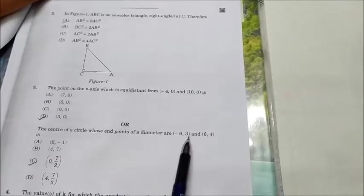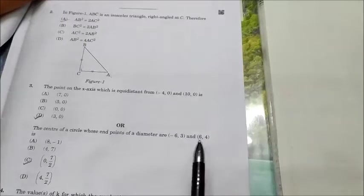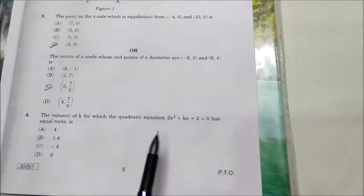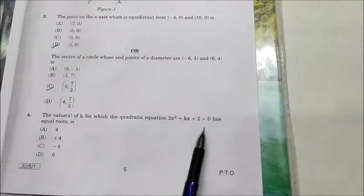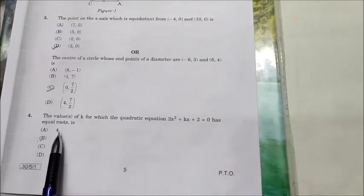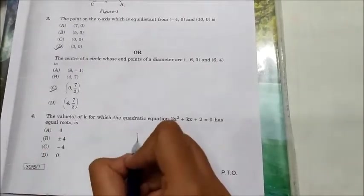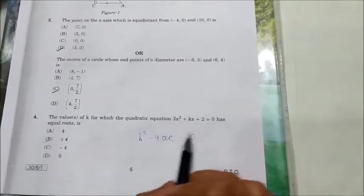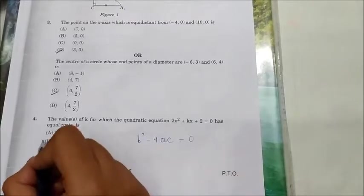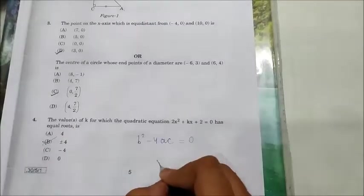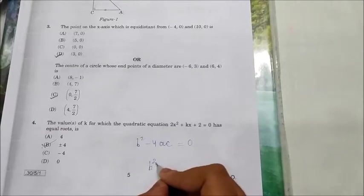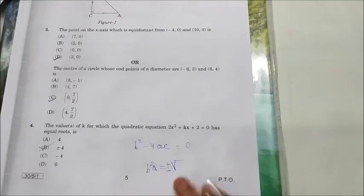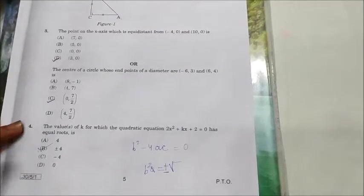Next, the value of k for which the quadratic equation 2x² + kx + 6 = 0 has equal roots. For equal roots we know that b² - 4ac = 0. So when you will put the values, you will get the value for k to be ±4. Because if something is in square over here, for example b², then when it will be transferred over there it will have under root plus-minus. That is why plus and minus 4 is the correct answer.